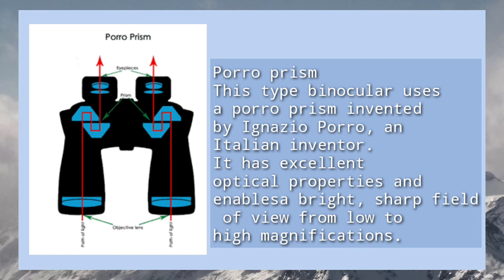This type of binocular uses a poro-prism, invented by Ignacio Porro, an Italian inventor. It has excellent optical properties and enables a bright, sharp field of view from low to high magnifications.